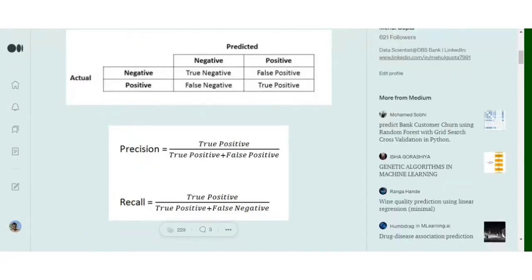The formula for precision is true positive upon true positive plus false positive. A true positive is a class which is actually 1 and is detected as 1 as well. A false positive is a class 0 but is detected as positive. For recall, the formula is true positive upon true positive plus false negative. A false negative is one which is positive but has been detected as negative by the system. So together we understand the formula for precision and recall, but it only takes two classes: 0 and 1.